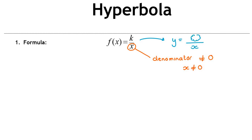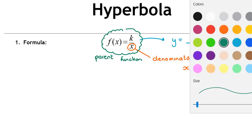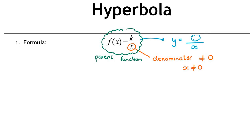If you have a constant divided by x, this is called a parent function. A parent function is the basic hyperbola — before you've stretched, translated, or reflected it. It's your original function, and all other hyperbolas come from it. So your parent hyperbola is something over x.